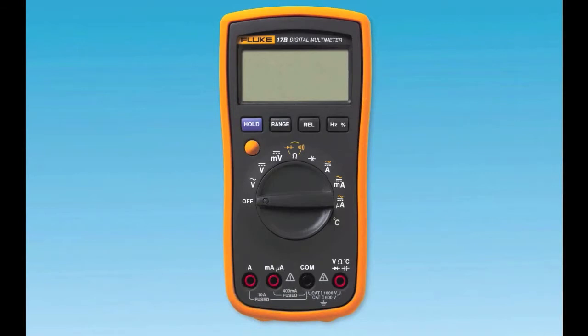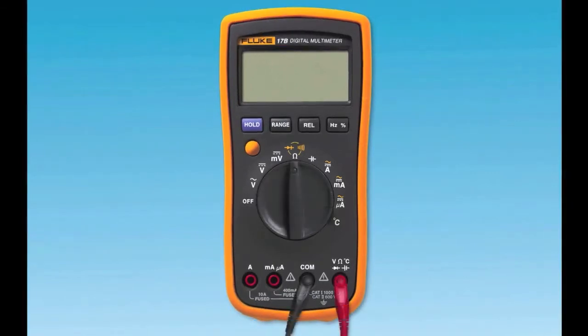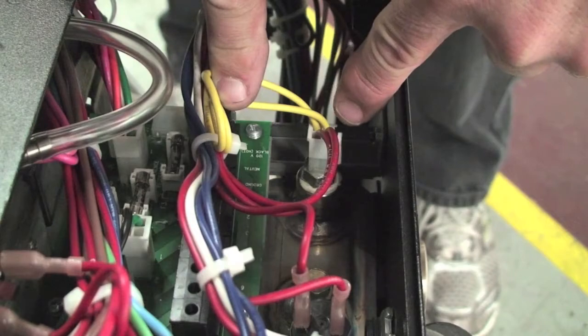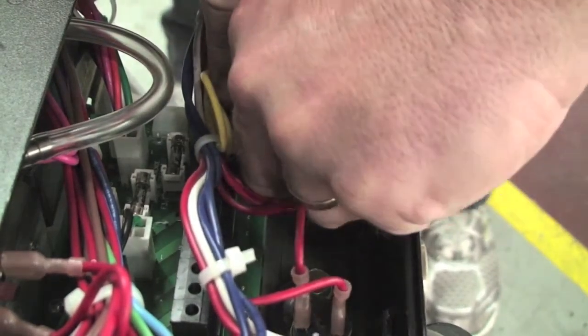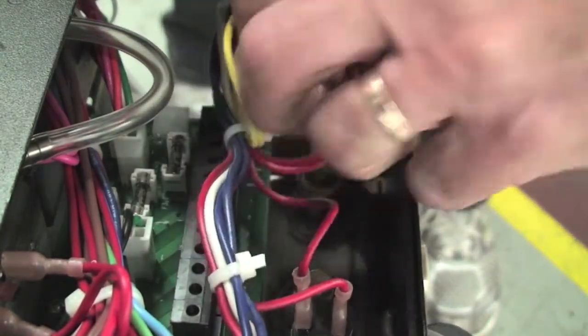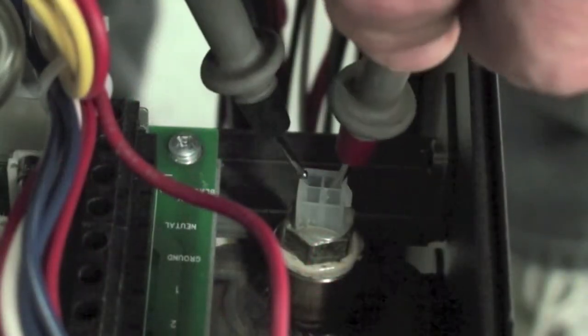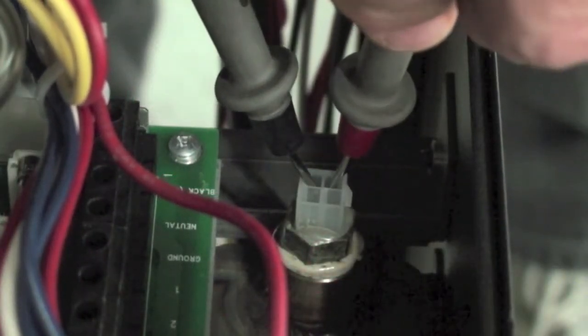To check if the sensor is bad, set your electrical meter to ohms value and measure the resistance by disconnecting the Molex connector from the sensor. Then put the two leads from your meter into the sensor connection. Make sure to put your two leads into the two pins on the connector that correspond to the yellow wires.